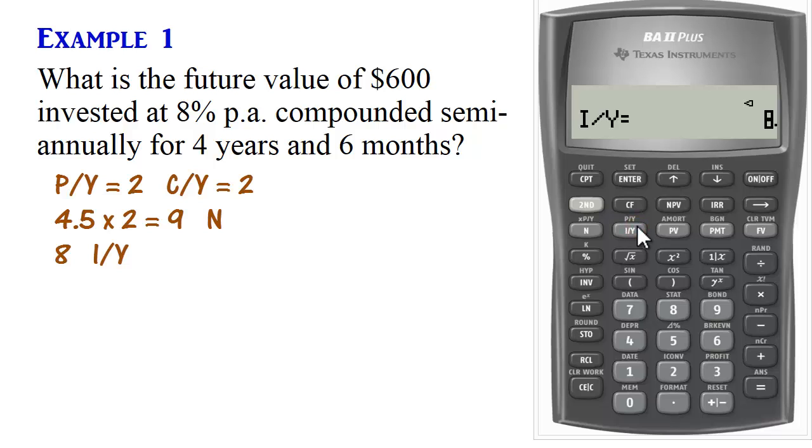And then present value is $600. So we put that in as $600, present value. And in this case, we don't have payment. But because we cleared our time value of money, we don't need to bother about payment. We can just move on.